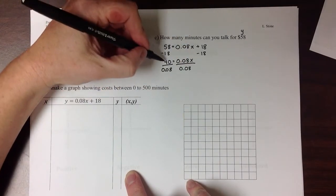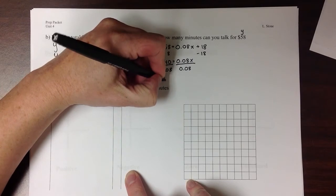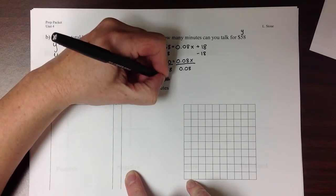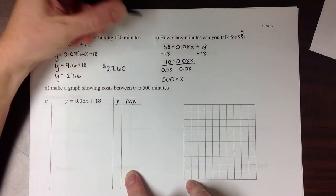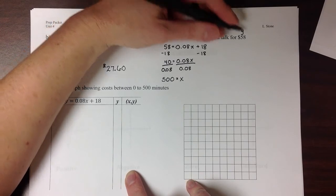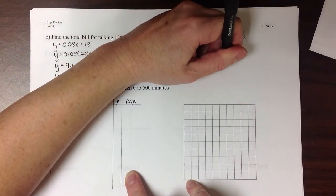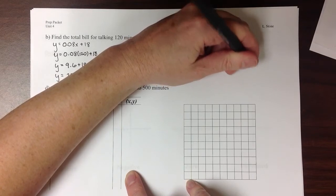Well, if I just divided 40 by 8, I would get 5. But since I'm dividing by 0.08, I need to go two more decimal places out, making a total of 500. So how many minutes can you talk for $58? You can talk for 500 minutes.